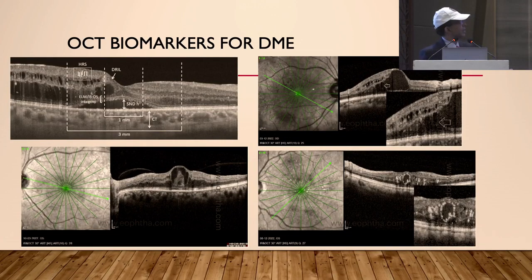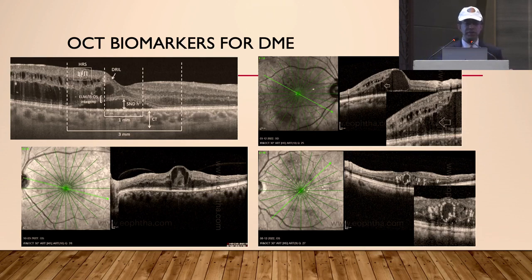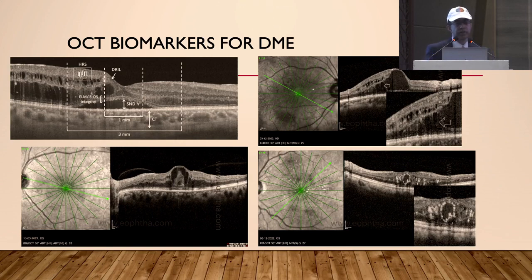The various newer biomarkers for DME include hyperreflective dots or spots, DRILL (dissociation of the retinal inner layers), sub-neurosensory detachment, ISOS integrity, and choroidal thickness. Choroid is becoming increasingly important — not only choroidal thickness but also choroidal vascularity index, which is becoming very important in the management of DME.